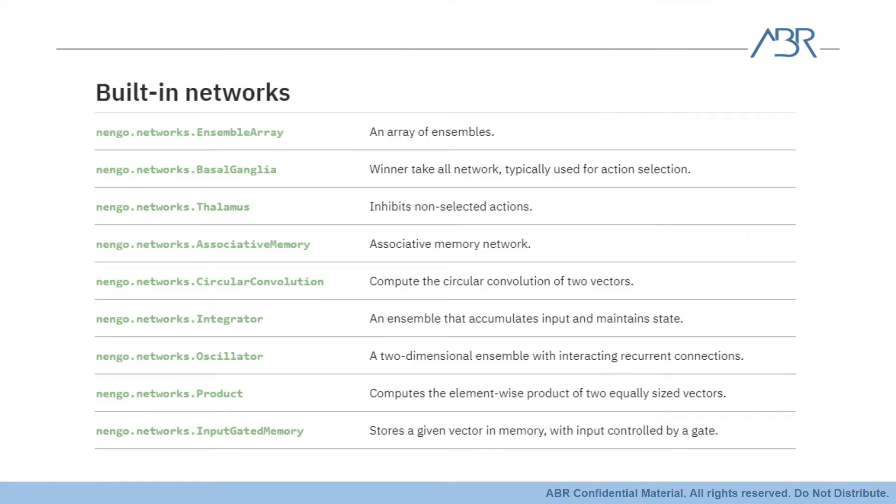And then the last thing I'll mention here is that Nengo also comes with a bunch of pre-built networks that help non-experts build up complex dynamical systems quickly, like our Action Selection Network, modeled after the basal ganglia, which is heavily involved in decision-making in biological brains. Other ready-to-go drop-in networks include an associative memory, integrator, oscillator, and gated memory.